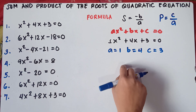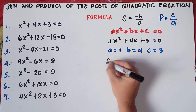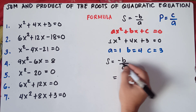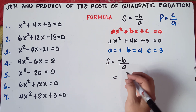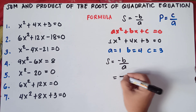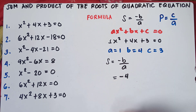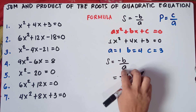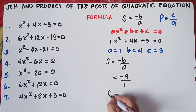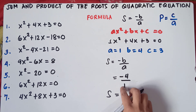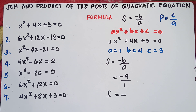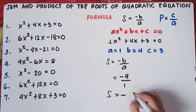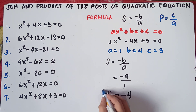We can now find the sum and product using the formula. S equals negative B over A. Copy the negative sign — it's already in the formula. So copy negative sign, and B is 4, over A which is 1. Negative divided by positive is negative. Negative 4 divided by 1 is negative 4. So the answer for the sum is negative 4.